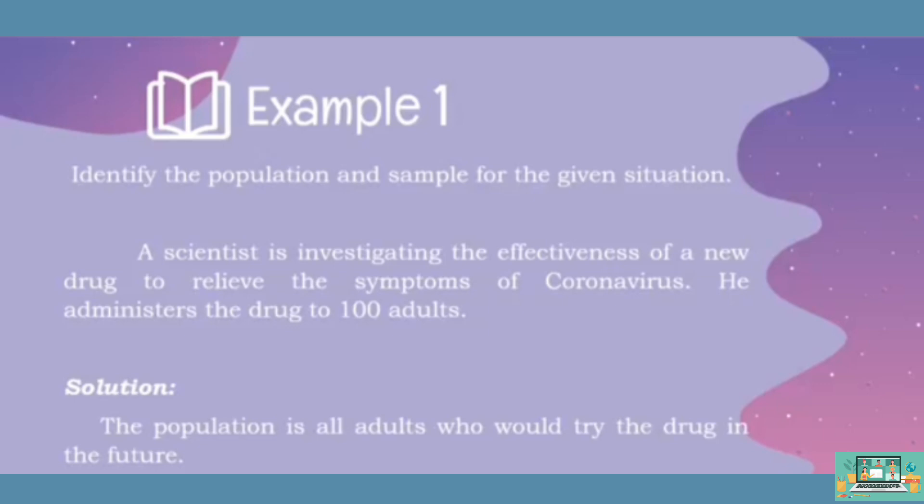He administers the drug to 100 adults. The population is all adults who would try the drug in the future. The sample is the 100 chosen adults.